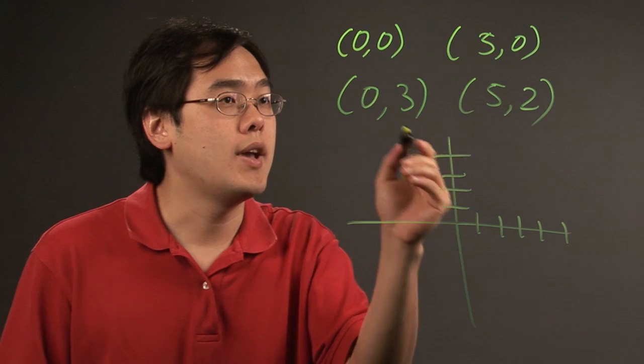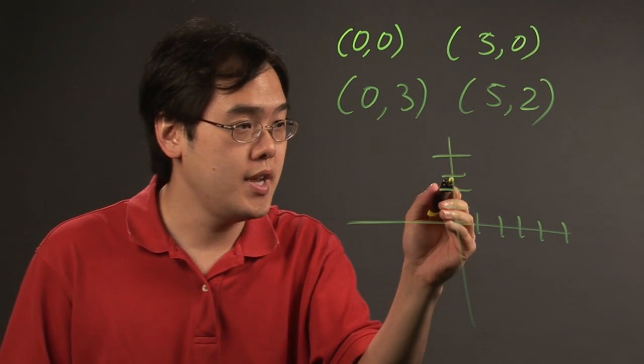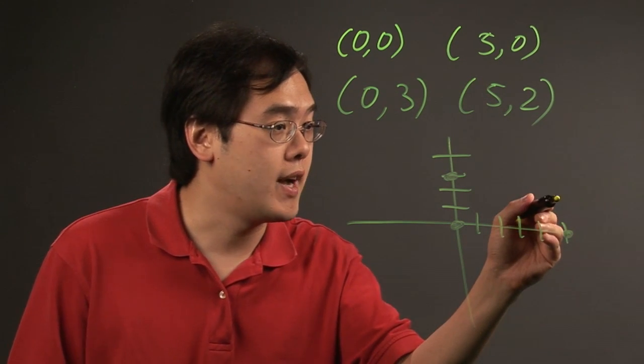Okay, and you have let's just say (0,0) is over here, (0,3) is over here, (5,0) is over here, and (5,2).